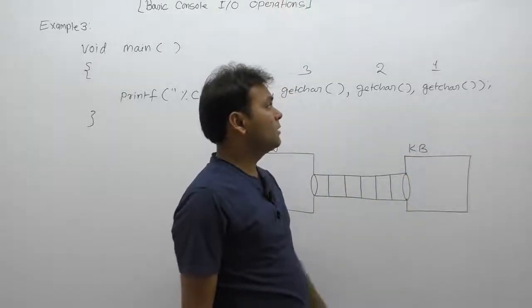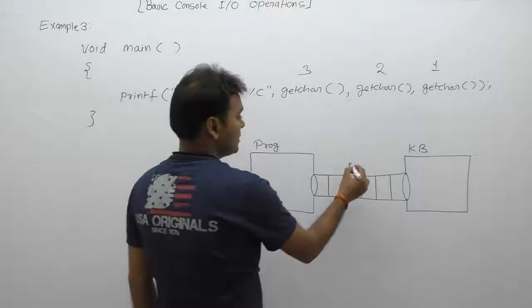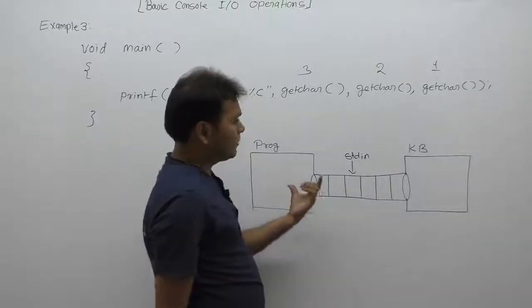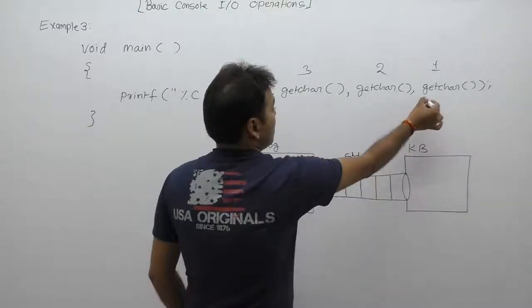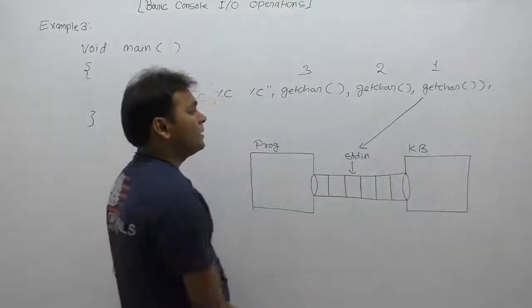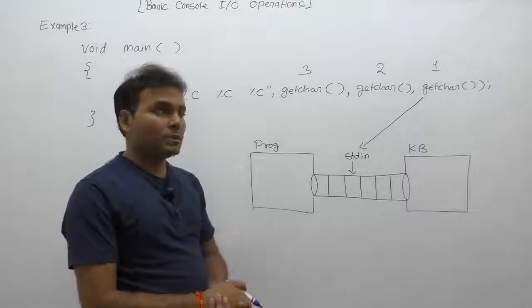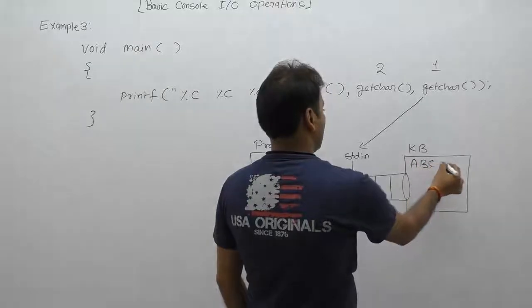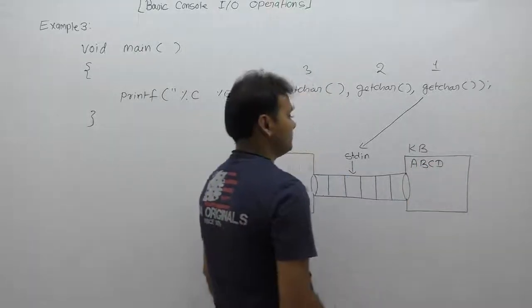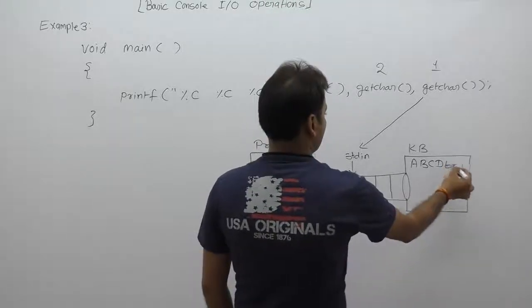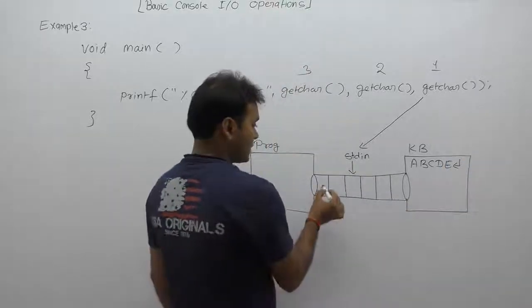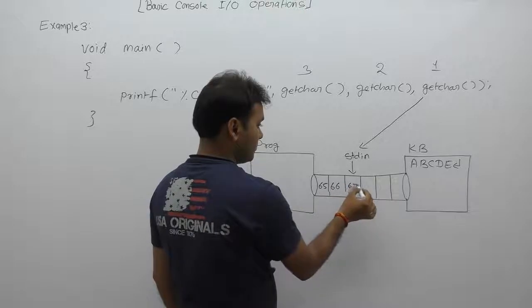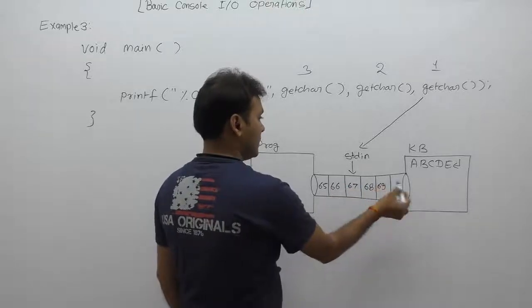Let's see how this program's execution works. It will read single character from standard input buffer. Suppose we are entering characters in the input buffer. The input buffer contains ASCII values 65, 66, 67, 68, 69, and enter key equivalent to 10.